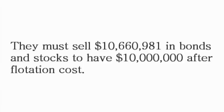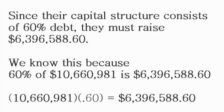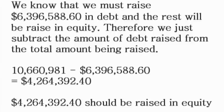Since their target capital structure is 60% debt and 40% equity, $10,660,981 times 60% equals $6,396,588.60 of debt that should be issued. $10,660,981 minus $6,396,588.60 equals $4,264,392.40, which should be issued as equity.